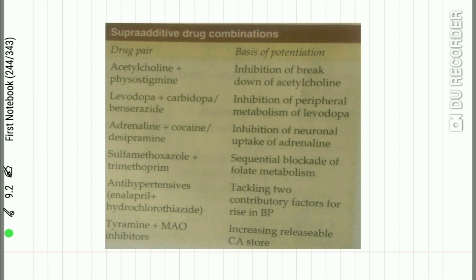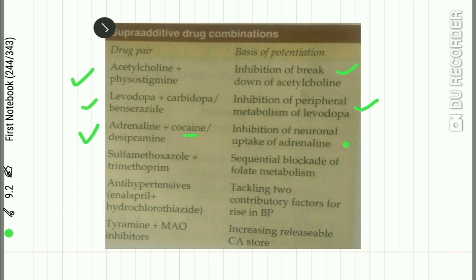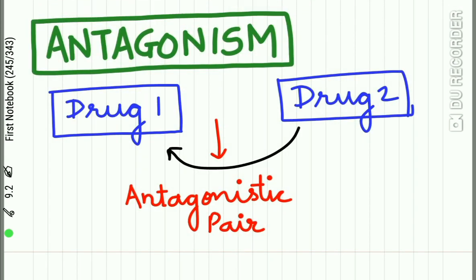Examples of supra-additive drug combinations include: acetylcholine and physostigmine, where physostigmine inhibits the breakdown of acetylcholine; levodopa plus carbidopa or benserazide, which inhibit peripheral metabolism of levodopa; adrenaline plus cocaine or desipramine, which inhibit neuronal uptake of adrenaline; and sulfamethoxazole and trimethoprim, which cause sequential blockage of folate metabolism.